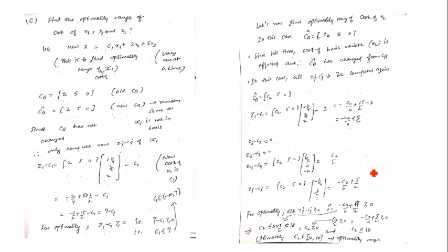The second type of question is: find the optimality range of the cost coefficients of x1, x2, and x3. The optimality range is the interval within which, if we vary the cost of a particular variable, the given optimal solution retains its optimality. We determine how much the cost of each variable can change while keeping the current solution optimal.